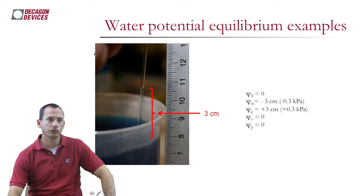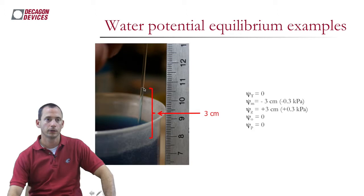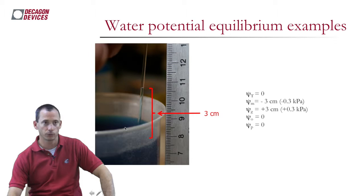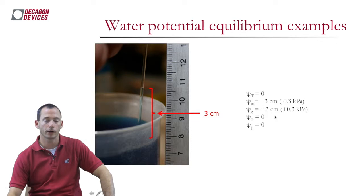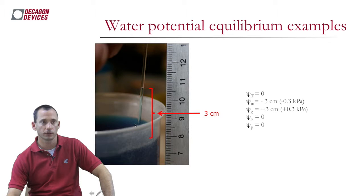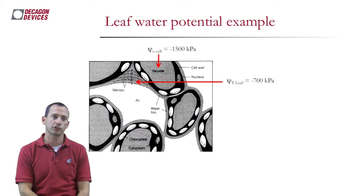In a capillary tube, water spontaneously climbs — say 3 cm — due to capillary forces, i.e., matrix potential. Here it's not a pressure potential pulling the water up but a matrix potential of negative 3 cm (negative 0.3 kPa) that draws it up, balanced by a gravitational potential of positive 3 cm. The matrix and gravitational potentials sum to zero at equilibrium.